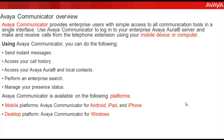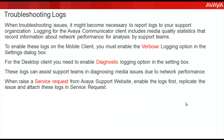Let's take a look at the troubleshooting part — how to enable the logs and how to send or attach the logs to the service request. While troubleshooting issues, it becomes necessary to report logs to your support organization. Logging for the Avaya Communicator client includes media quality statistics that records information about network performance for analysis by the support team.